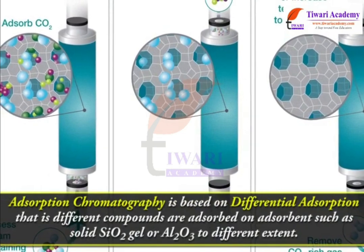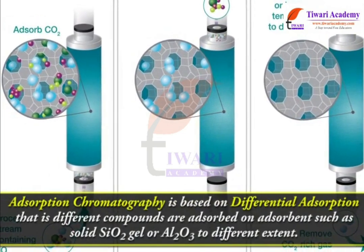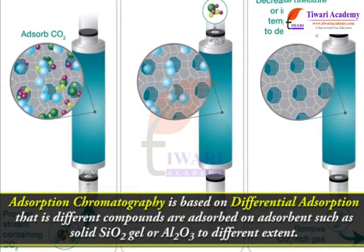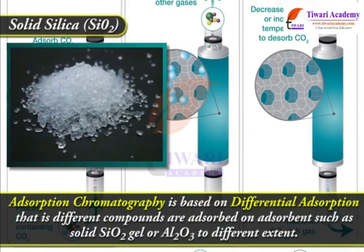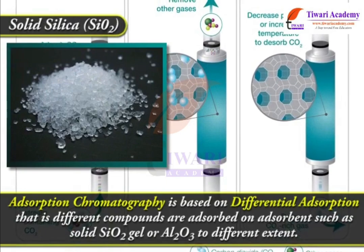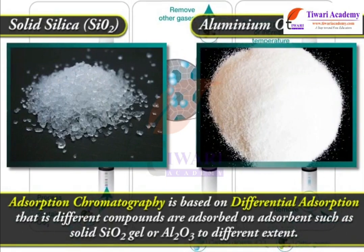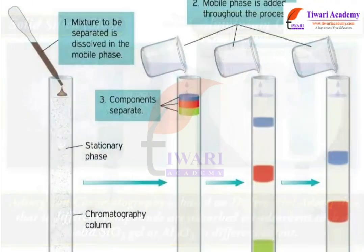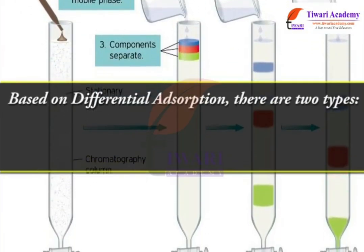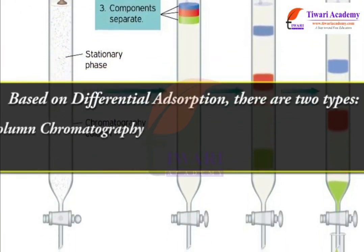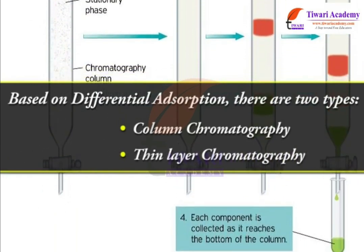Classification of chromatography: absorption chromatography and partition chromatography. Absorption chromatography is based on differential absorption — that is, different compounds are absorbed on adsorbents such as solid SiO2 gel or Al2O3 to different extents. Based on different absorption, there are two types: column chromatography and thin layer chromatography.